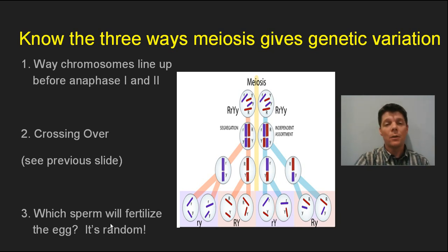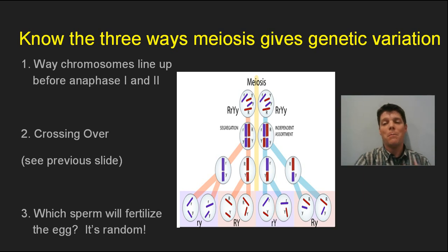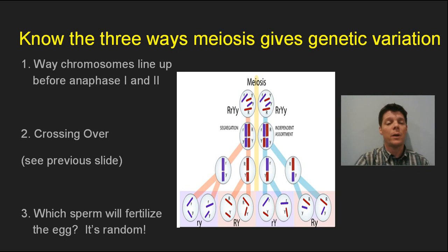Another way meiosis increases genetic variation is that the male produces many, many sperm. When fertilization takes place, many sperm could fertilize the egg, but only one will — and this is a random process.